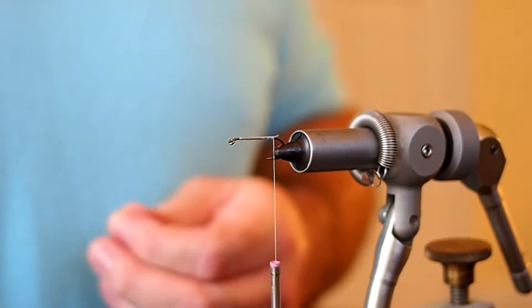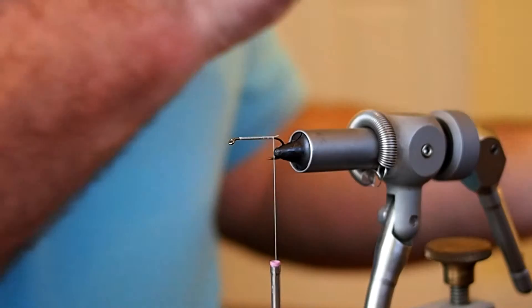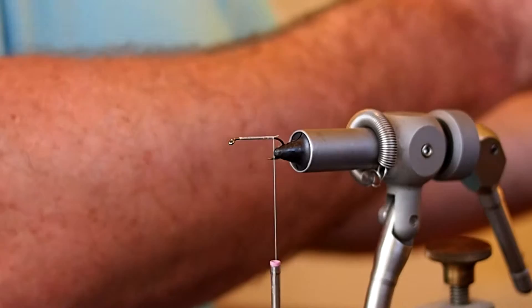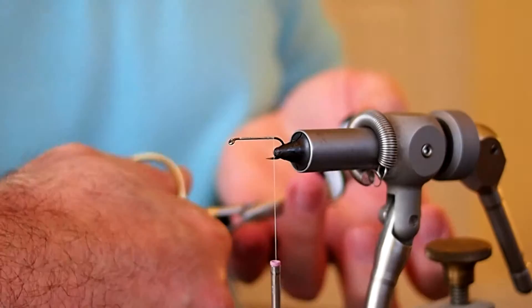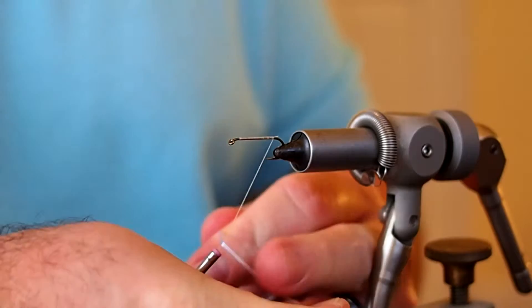For the body I'm going to be using some white Uni-Floss and I'm going to peel off about 18 inches of that. Then you can just cut it off of your spool. What you want to do is just fold that in half and fold it in half one more time around your thread and just capture it.